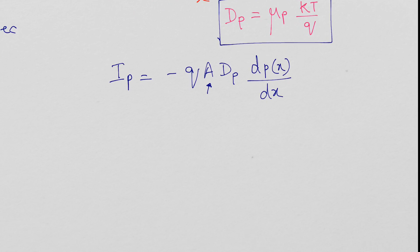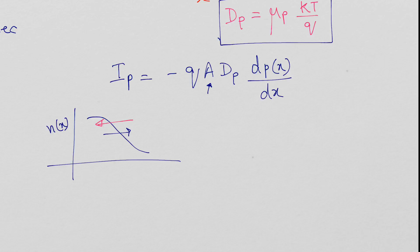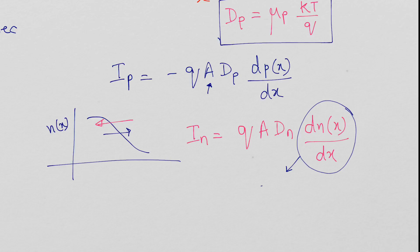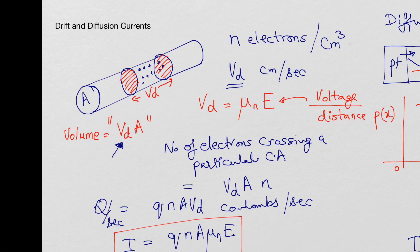Similarly, if the concentration of electrons n(x) is varying with respect to space, say electrons are moving in the positive x direction, then the current is actually going in the opposite direction. The electron diffusion current in can be written as: in = q × A × Dn × dn(x)/dx. Here we do not put a minus sign. Since dn(x)/dx is negative, we get a negative current in the positive x direction — meaning the conventional current moves opposite to the electron flow. These are the drift and diffusion currents encountered in semiconductors.